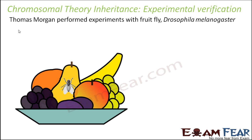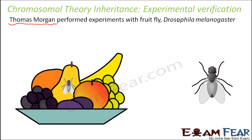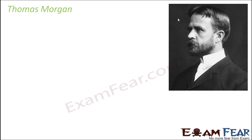That experimental verification was provided by a famous scientist called Morgan. Thomas Morgan was the one who performed a series of experiments with fruit fly, Drosophila melanogaster, and actually proved that the chromosomal theory of inheritance existed. Morgan is often termed as the fly man of genetics because of the number of experiments he performed with the fruit fly. He is also known as the father of experimental genetics because his work was mostly based on experiments performed with Drosophila.